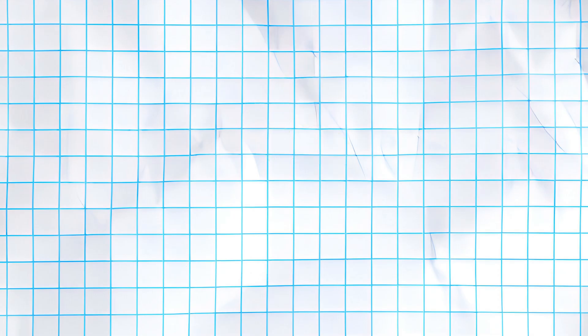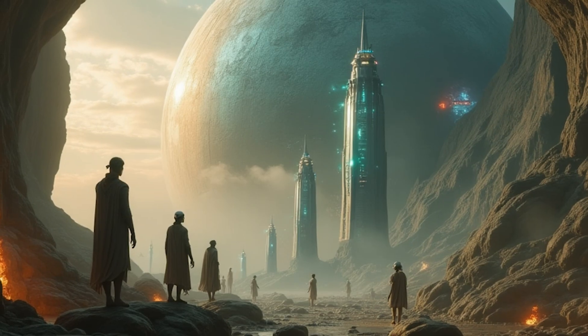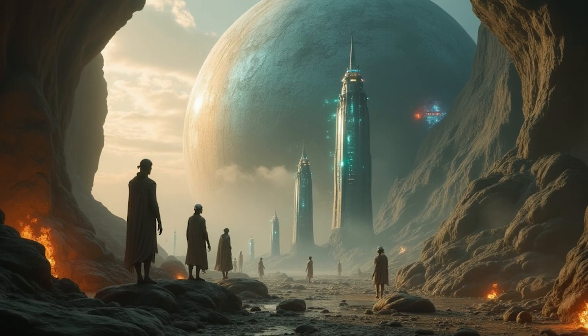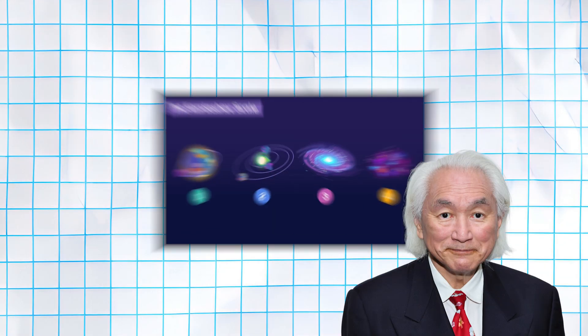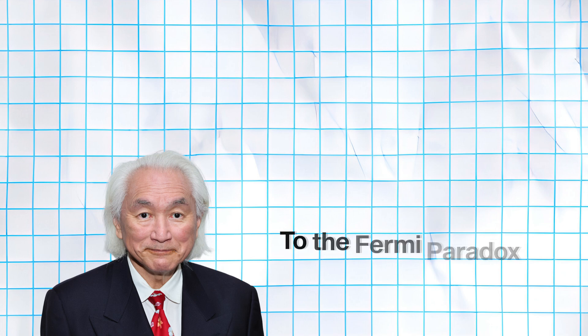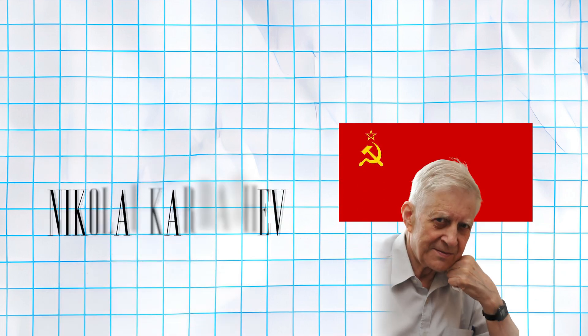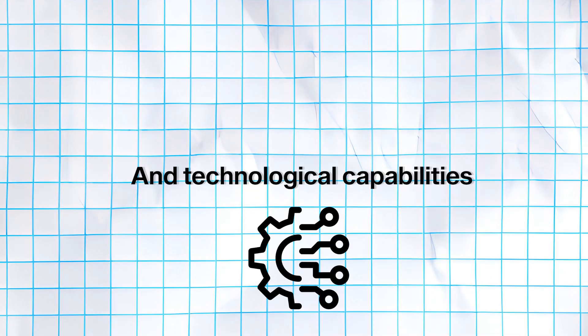This hypothesis also addresses the question of why advanced civilizations don't make contact. Just as humans don't typically attempt to communicate with ant colonies or share our technology with them, advanced extraterrestrial civilizations might see no purpose in contacting a species they view as primitively developed. Kaku frequently references the Kardashev scale when discussing advanced civilizations and their relationship to the Fermi Paradox. This scale, developed by Soviet astronomer Nikolai Kardashev, classifies civilizations based on their energy consumption and technological capabilities.